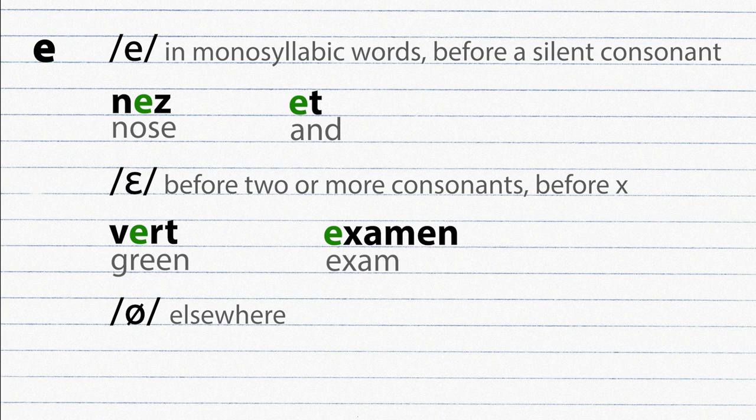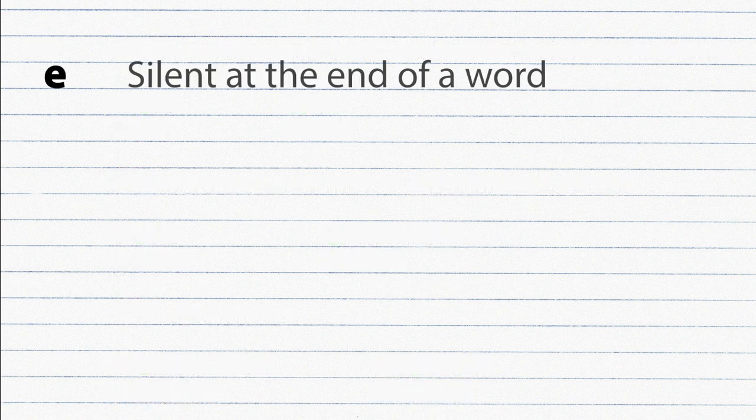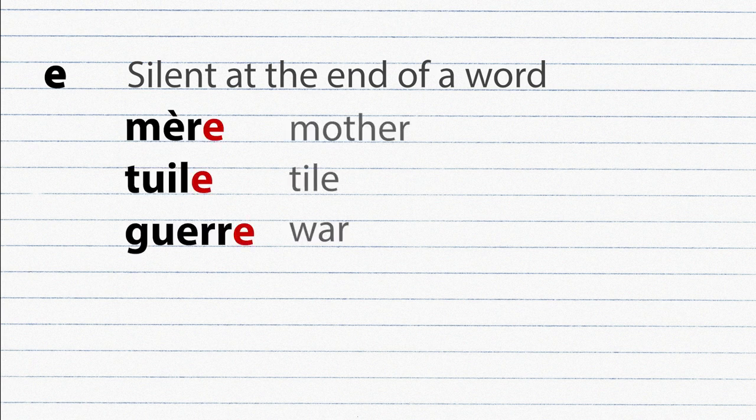Elsewhere is pronounced as E. Demande, mener. And as we mentioned earlier, the letter E is silent when it comes at the end of a word. Mer, tuile, guerre.